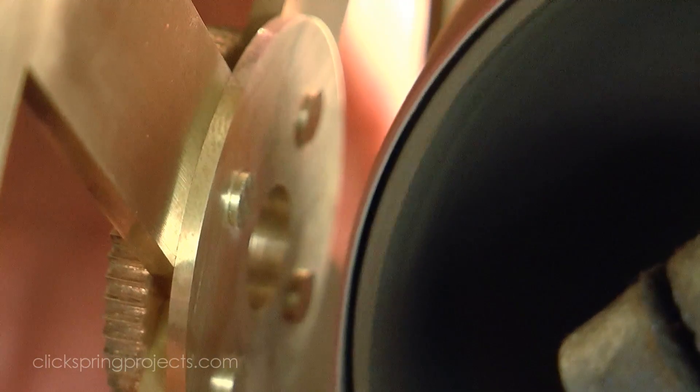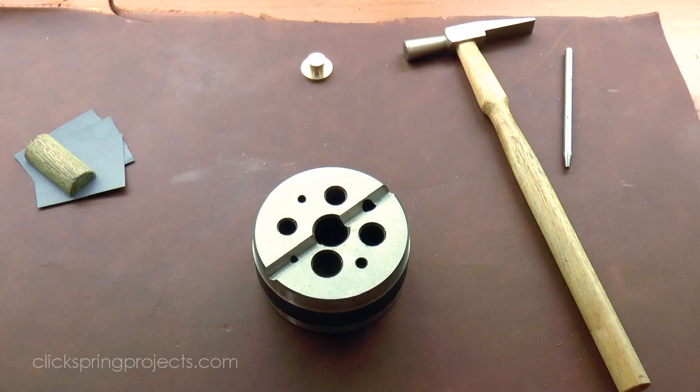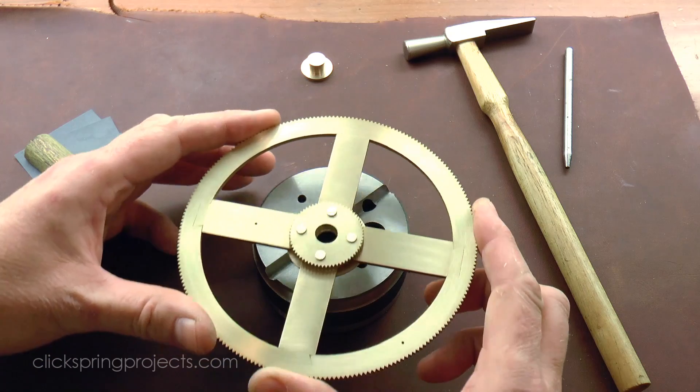I reduced the length of the rivets using the belt sander, and then started the process of permanently setting them in place.